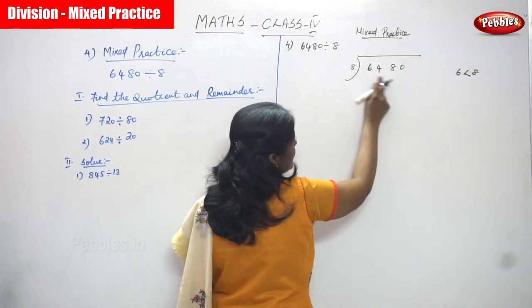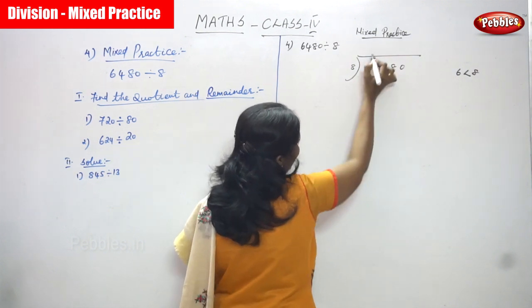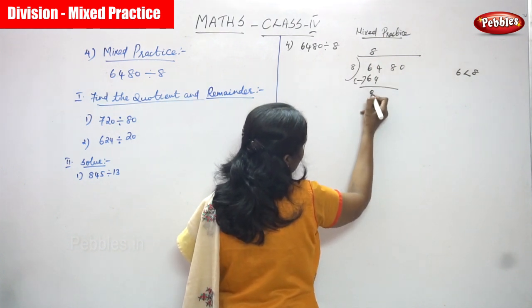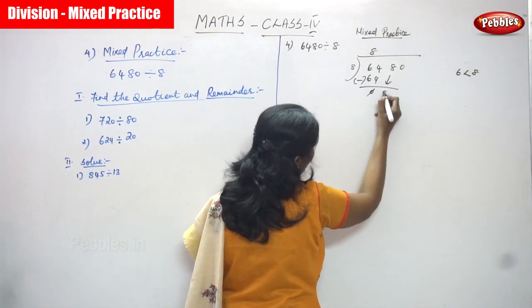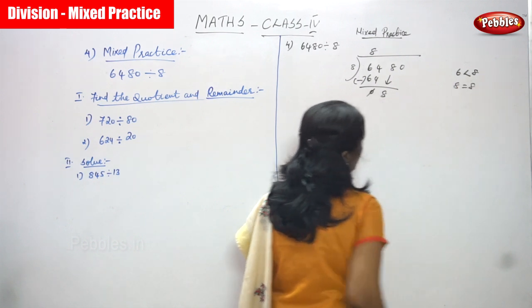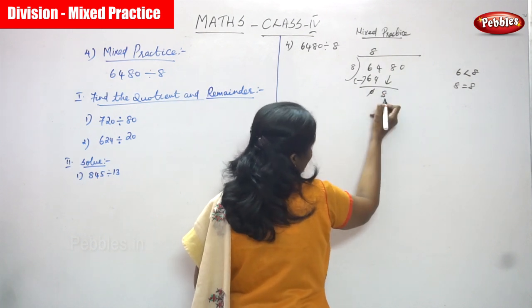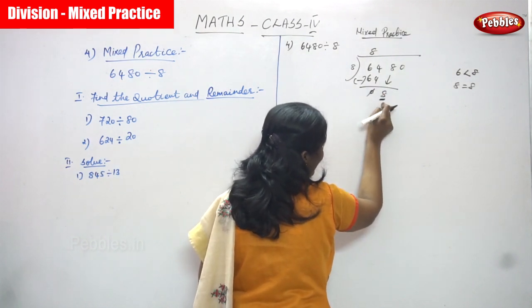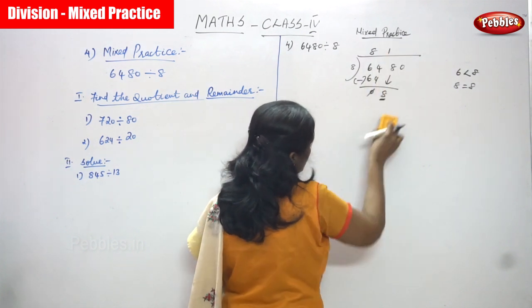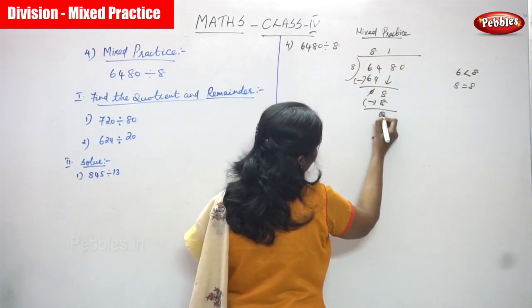In 64, how many times does 8 go? That is 8 eights are 64. So you write 8 in the quotient, subtract, and you get 0. Cancel that 0. After that you bring down 8 only. So 8 and 8 — both are equal. In 8, 8 goes how many times? That is 8 ones are 8. So you write 1 in the quotient and subtract. You get 0, cancel that 0.